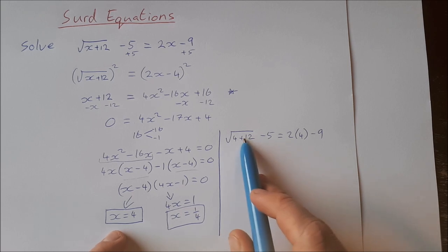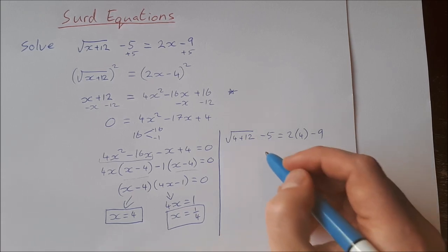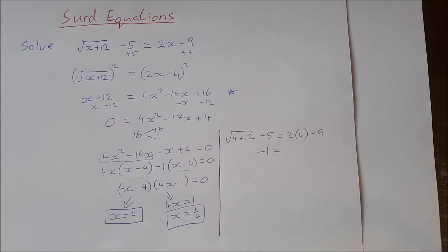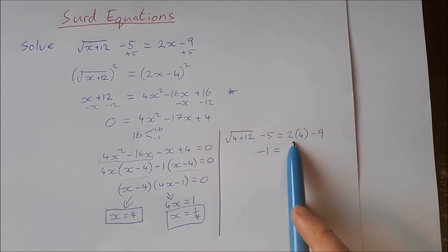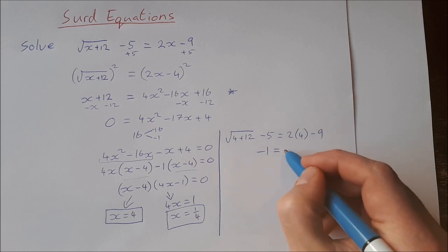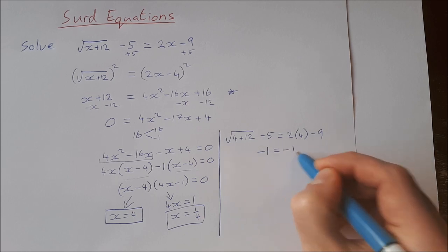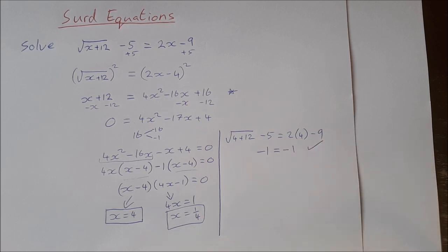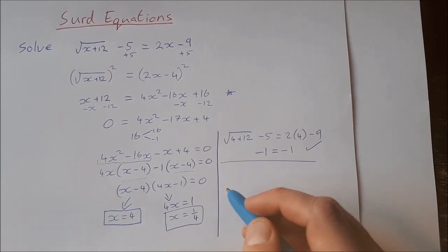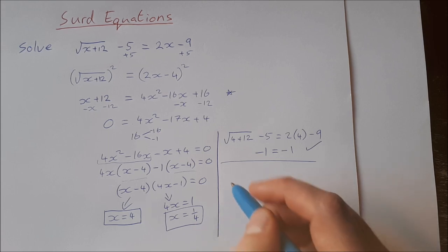Substituting x equals 4: the square root of 4 plus 12 minus 5 equals 2 times 4 minus 9. On the left: 4 plus 12 is 16, square root of 16 is 4, and 4 minus 5 is minus 1. On the right: 2 times 4 is 8, minus 9 is also minus 1. So that one works — x equals 4 is a solution.